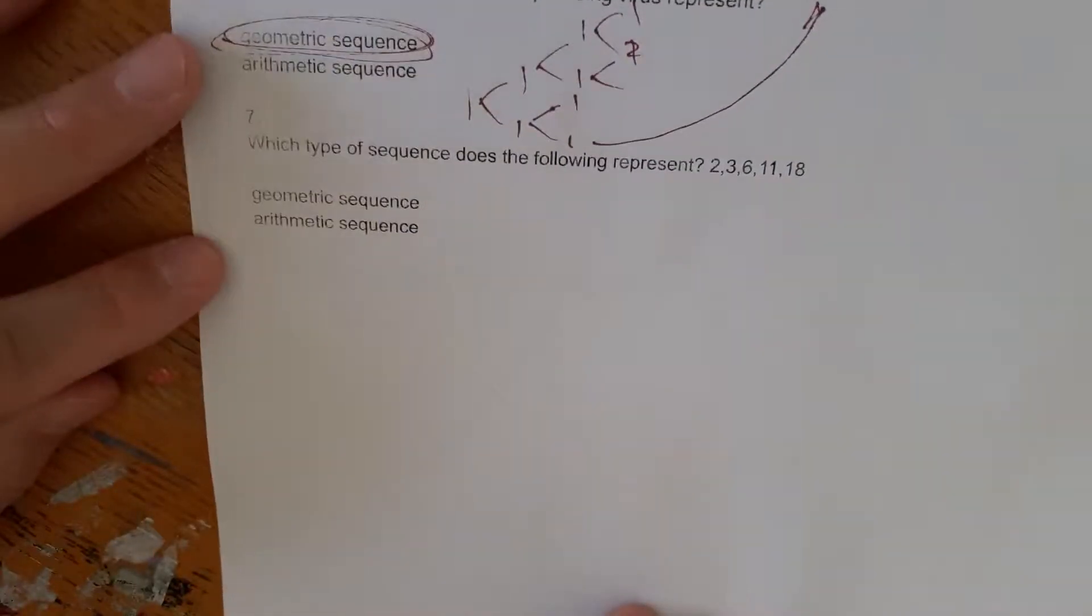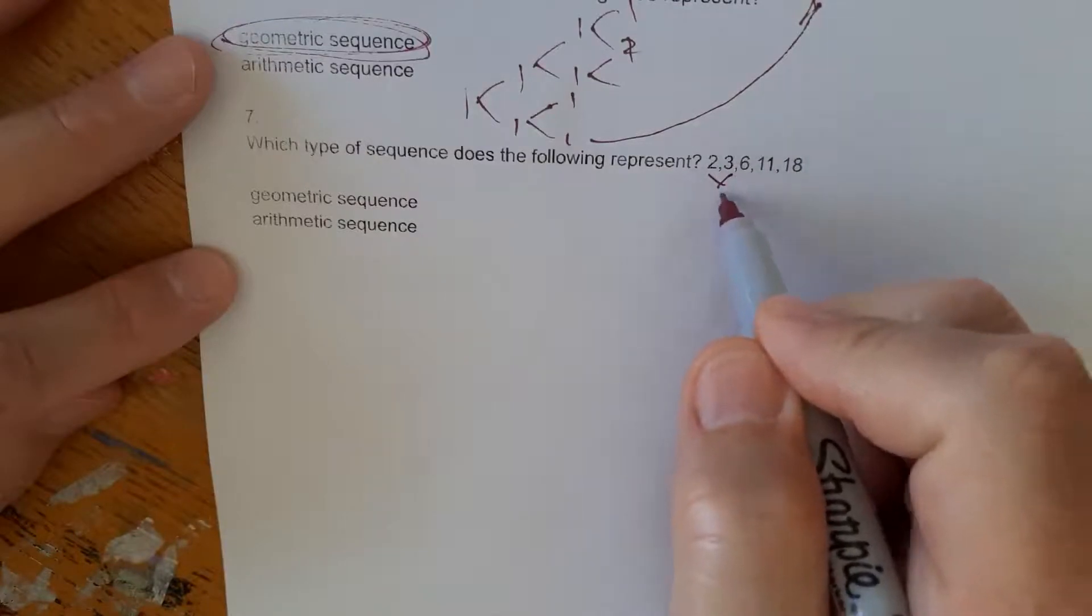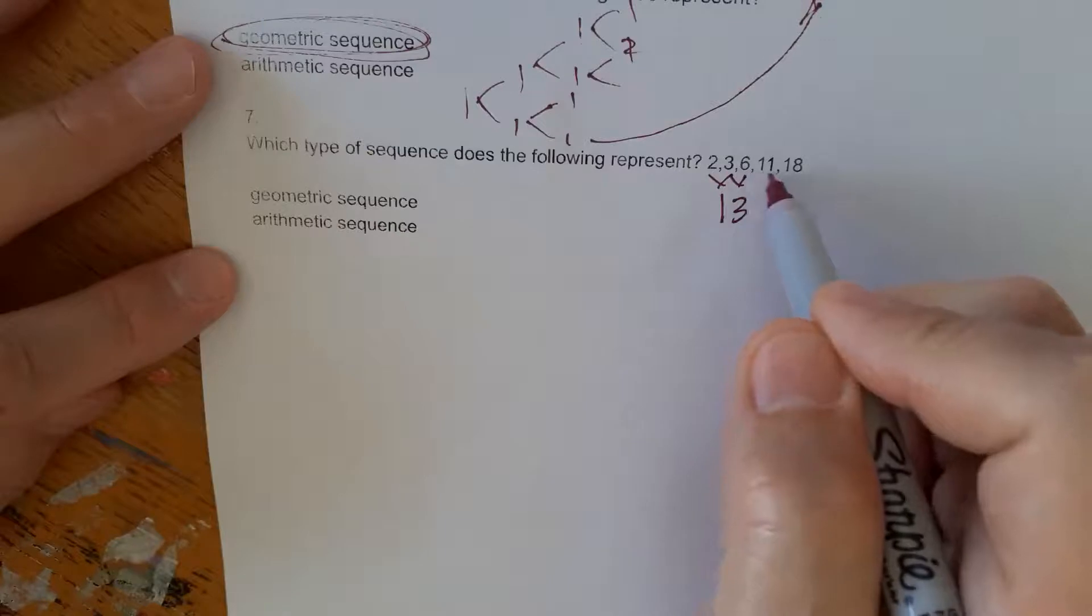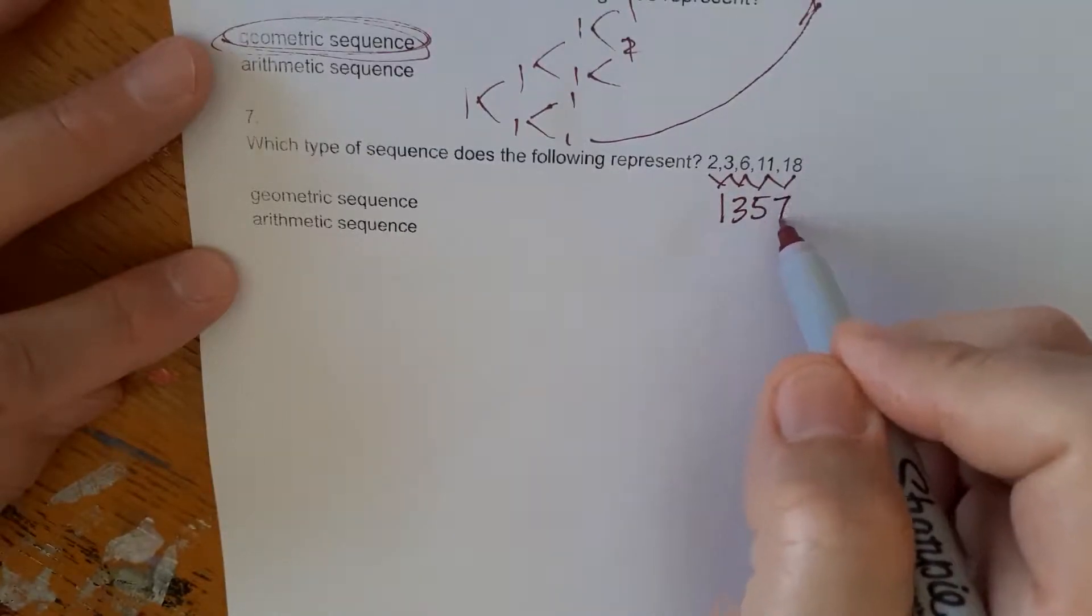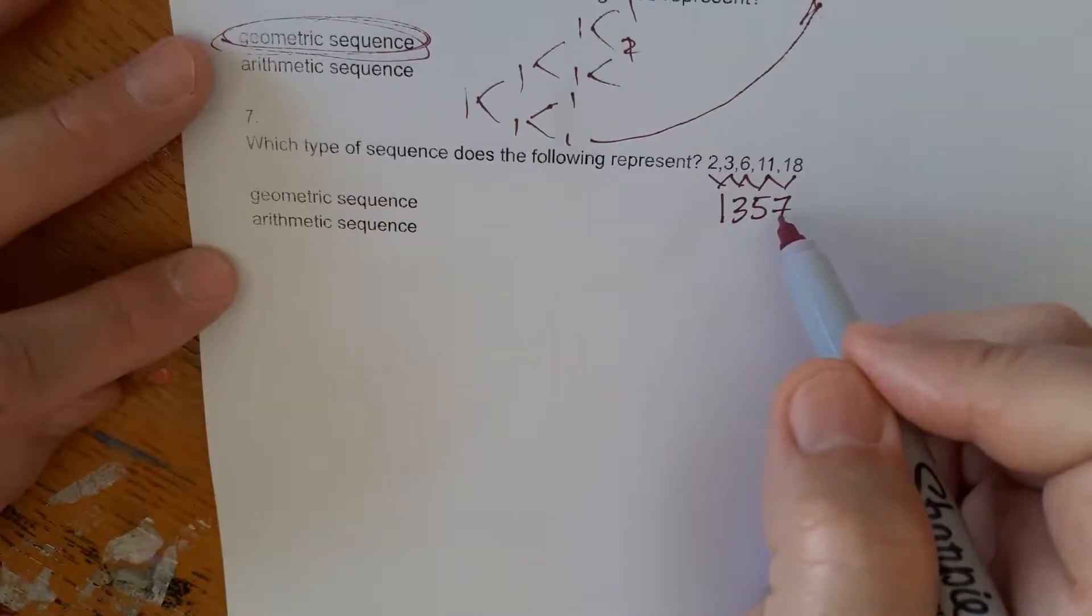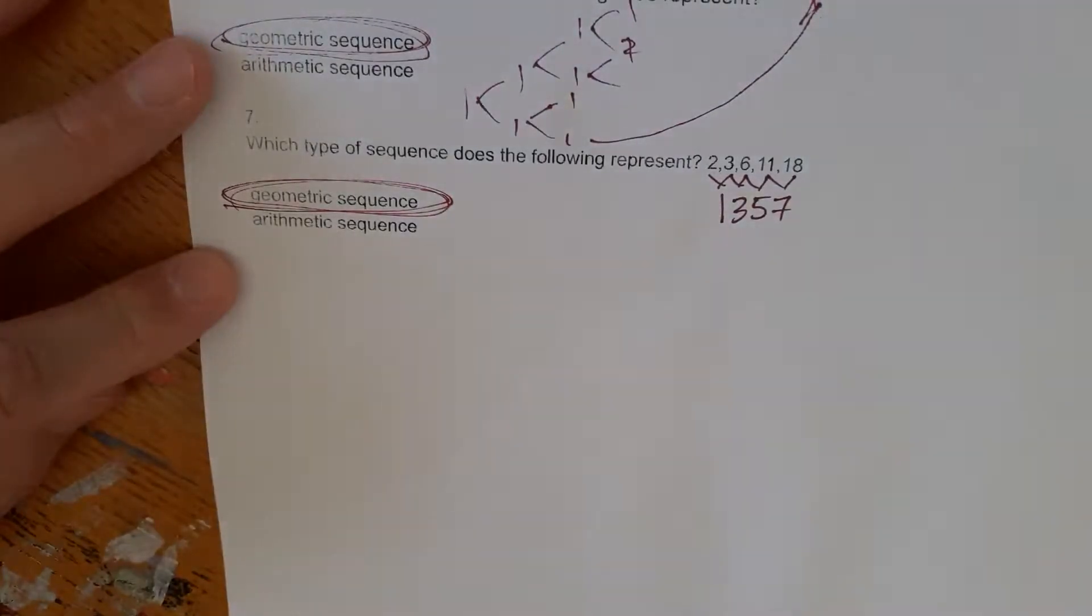Which type of sequence does the following represent? Well, let's see. 2 to 3 is 1. 3 to 6 is 3. 6 to 11 is 5. 11 to 18 is 7. So notice that the number between the two is accelerating. This is a geometric sequence, right? Because of that acceleration.